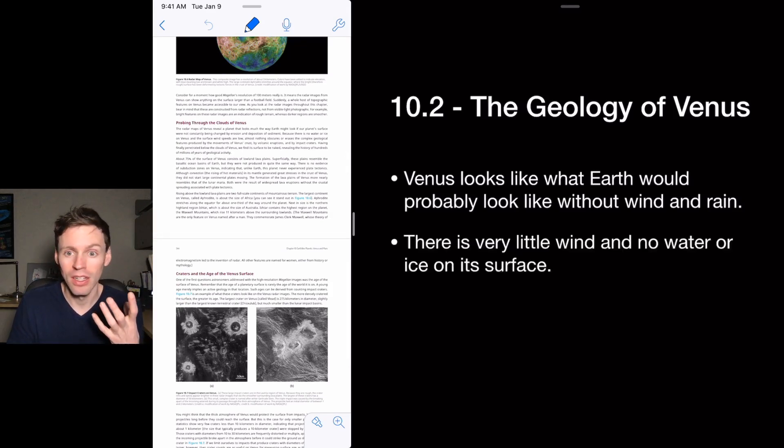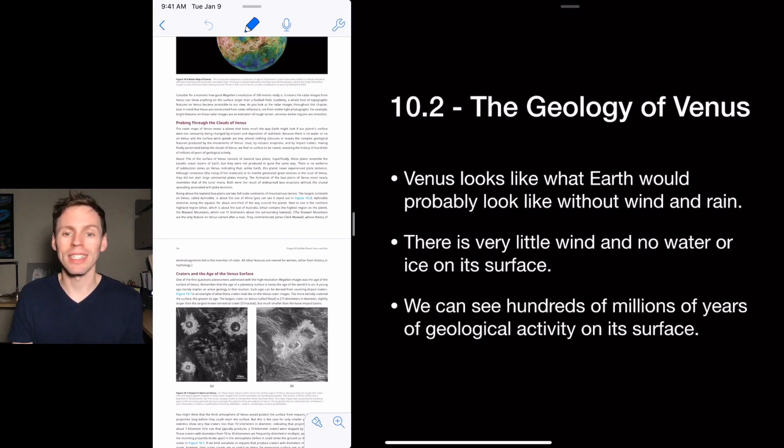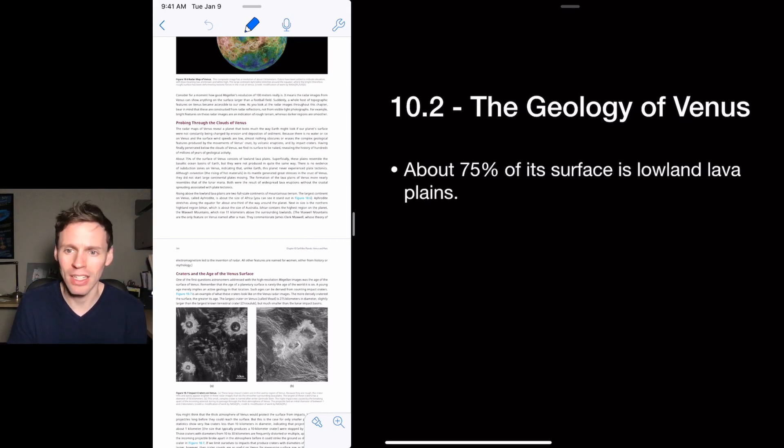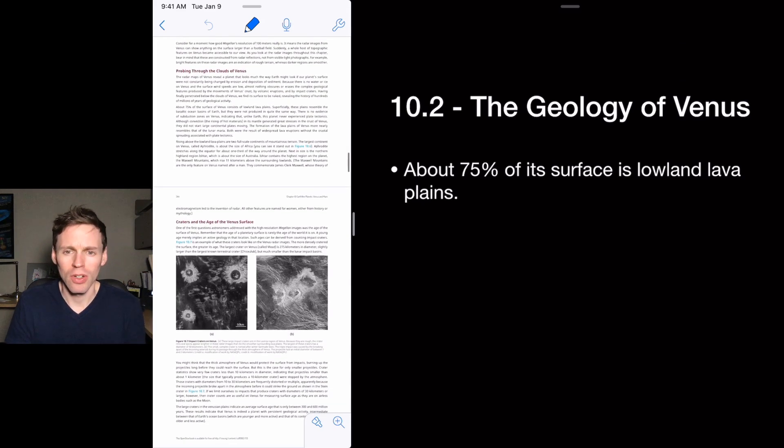Venus probably looks like what Earth would look like without wind and rain. Venus, the surface of it, there's very little wind on the surface. There's no water or ice. It's just hot and dry. And we can see that the surface of Venus has been active. And we can see how active it's been, and that gives us an estimate of the age of the planet, of its surface.